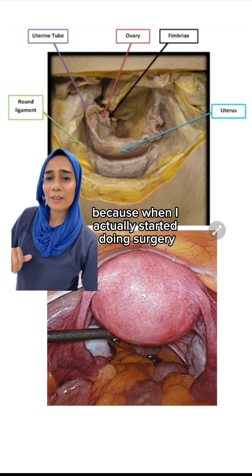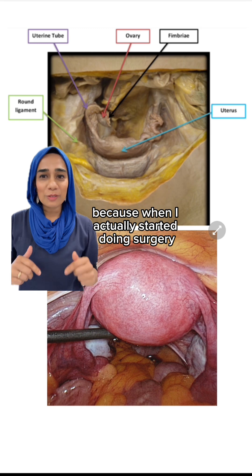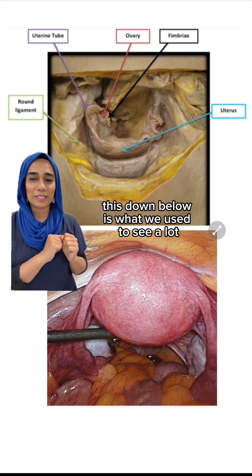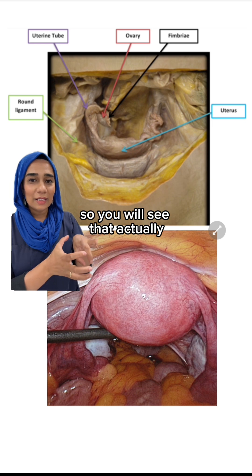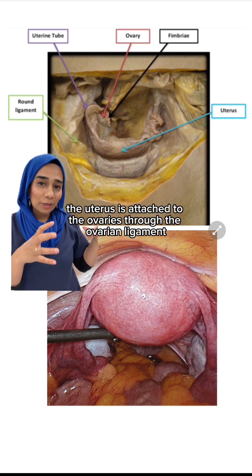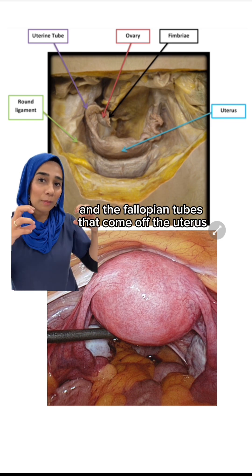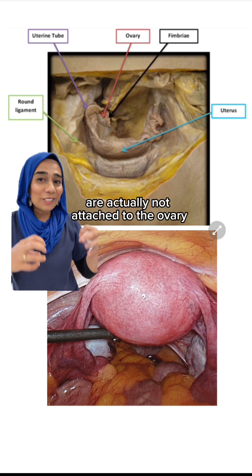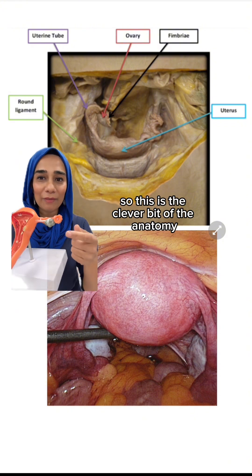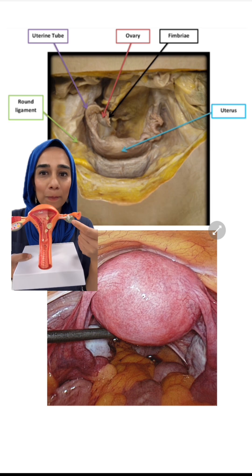When I actually started doing surgery during my gynae rotation, this is what we used to see. The uterus is attached to the ovaries through the ovarian ligament, and the fallopian tubes that come off the uterus are actually not attached to the ovary.